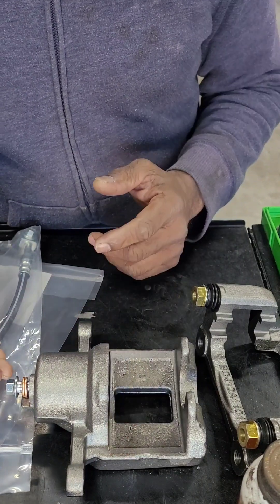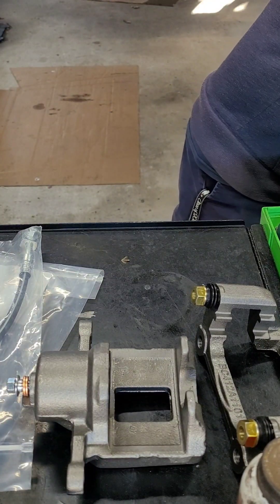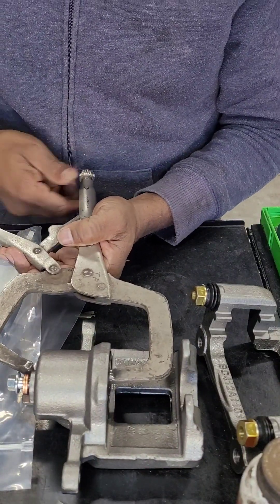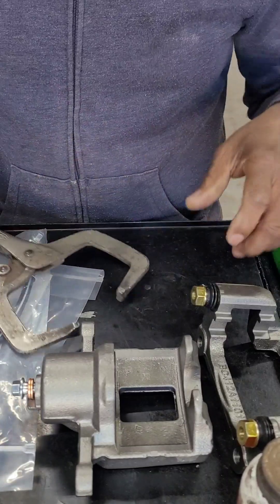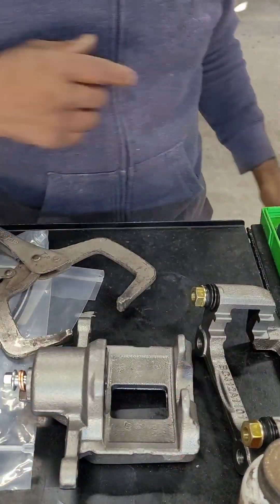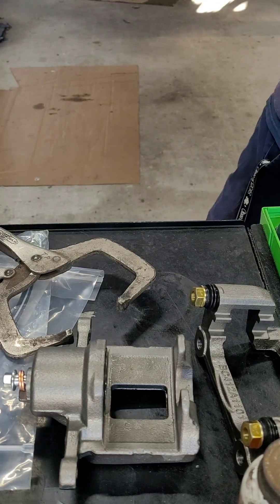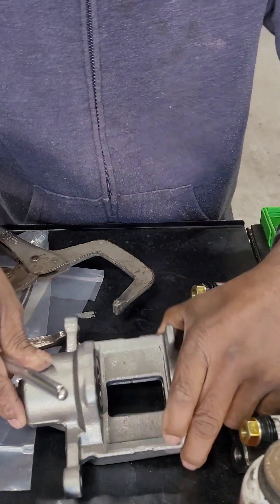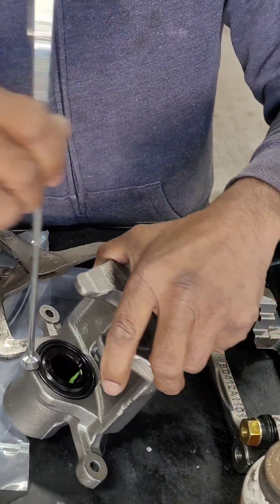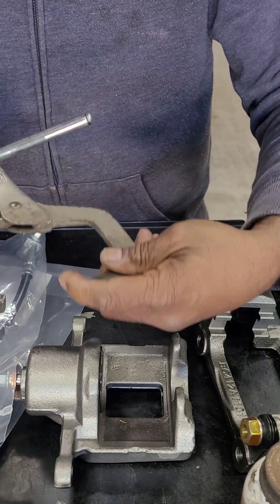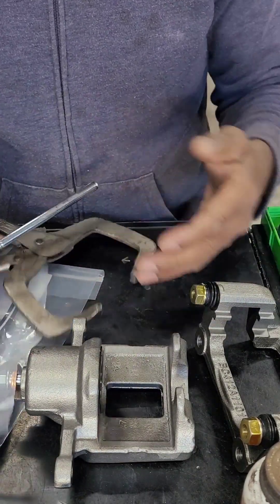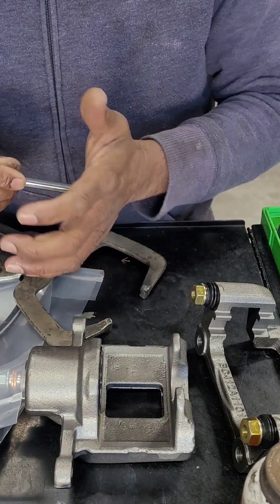If you're going to use this, be careful because not all caliper pistons are made out of metal. If your caliper piston is not made out of metal, you don't want to use this metal tool—it's going to punch a hole straight through it. You can put an old brake pad there and push on that, or you can get the correct brake caliper tool to push it back in.